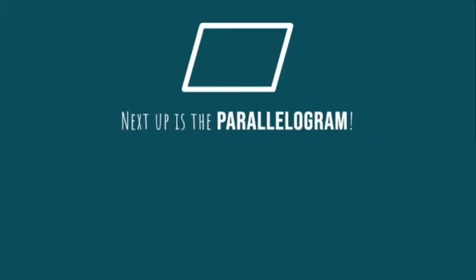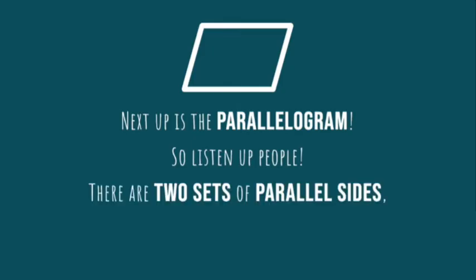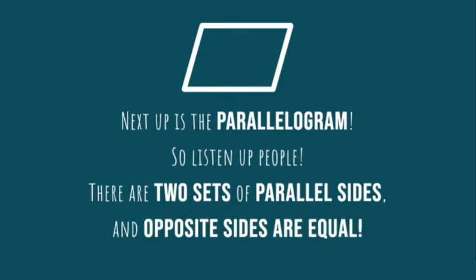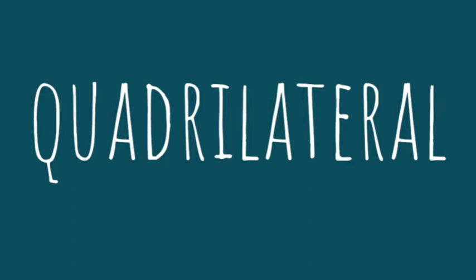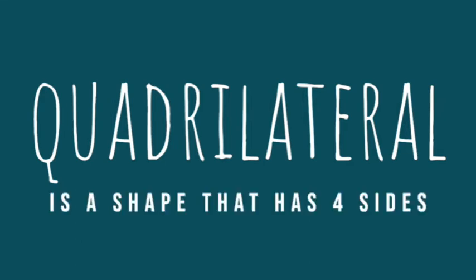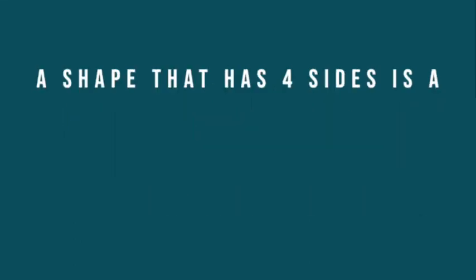Next up is the parallelogram, so listen up people. There are two sets of parallel sides and opposite sides are equal. Quadrilateral — a shape that has four sides, a shape that has four sides.